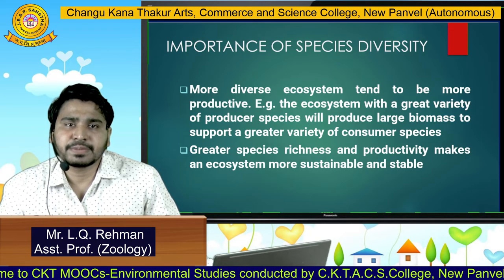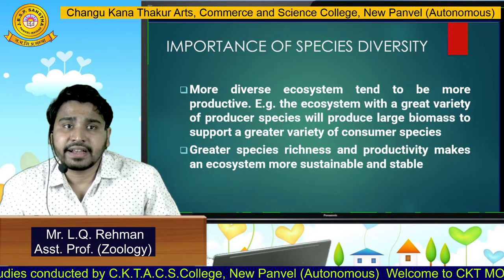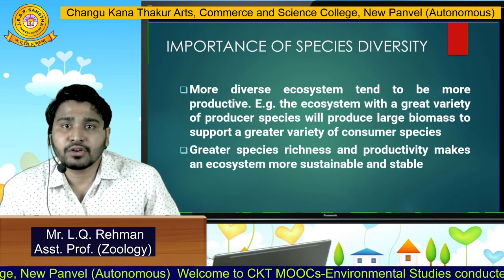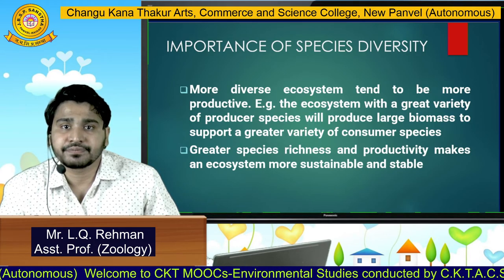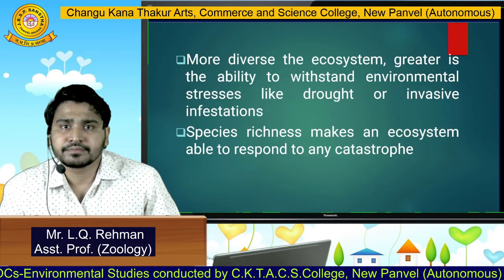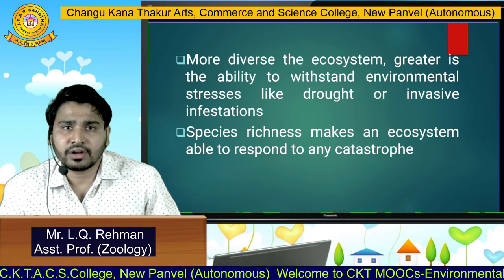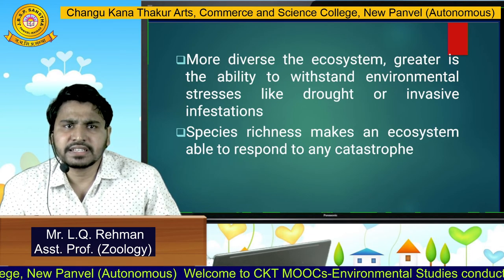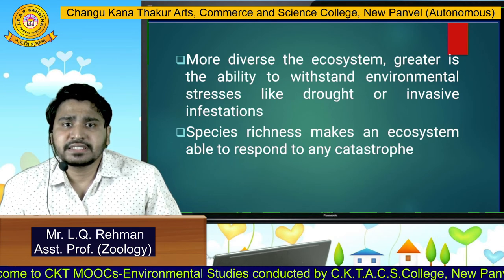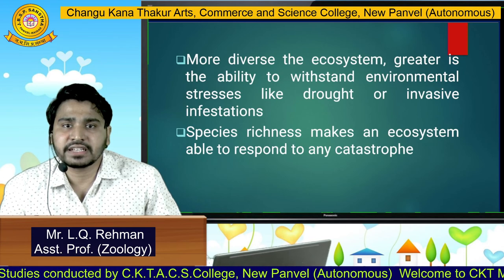What are the importance of species diversity? The more diverse an ecosystem, the more productive it tends to be. For example, an ecosystem with a great variety of producer species will produce large biomass to support a greater variety of consumer species. Greater species richness and productivity makes an ecosystem more sustainable and stable. If the ecosystem is more diverse, then greater is its ability to withstand environmental stresses like drought or invasive infestation — species which are not native to that particular area. Species richness makes an ecosystem able to respond to any kind of catastrophe.